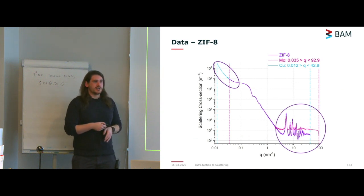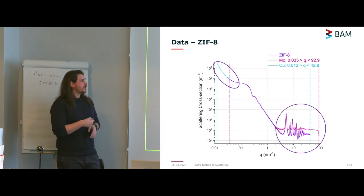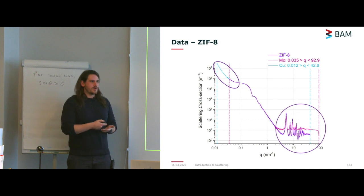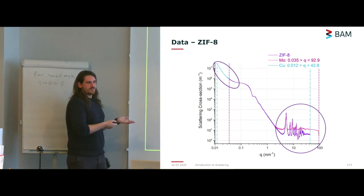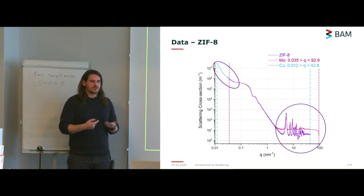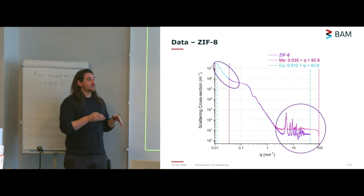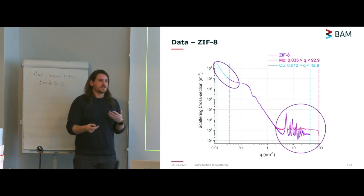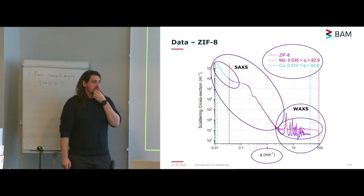The problem is that SAXS alone doesn't give us a way to prove which interpretation is correct — this is where the ambiguities come in again. I can assume from prior knowledge that we have a packed powder and know the shape of the particles, so I can get the size out. However, assuming there are no aggregates may not be the most correct thing, since aggregates would scatter over in a region that isn't covered by small angle scattering — more in the ultra-small-angle regime. You need something else to prove your hypothesis between these two interpretations.